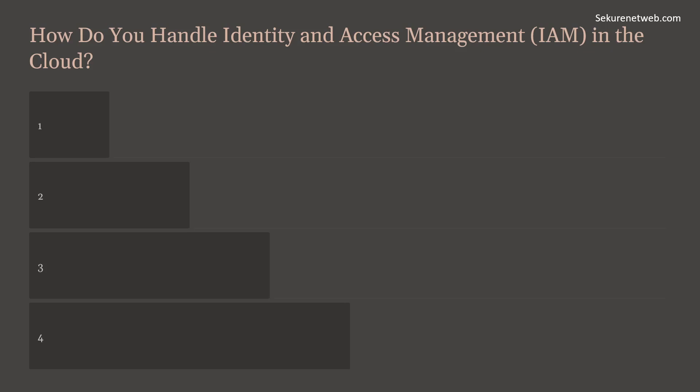Question number four: how do you handle identity and access management in the cloud? Effective IAM is critical for securing cloud environments. Key practices include the principle of least privilege using Role-Based Access Control, which defines specific permissions and assigns users to roles based on their job functions. There is also Attribute-Based Access Control, which uses user attributes and environmental conditions to grant access dynamically.